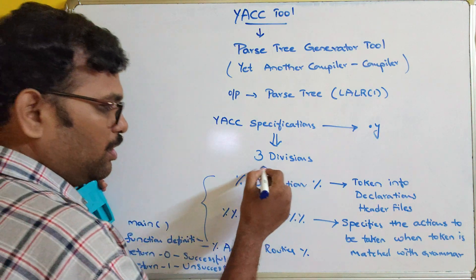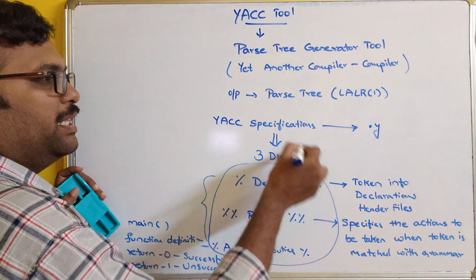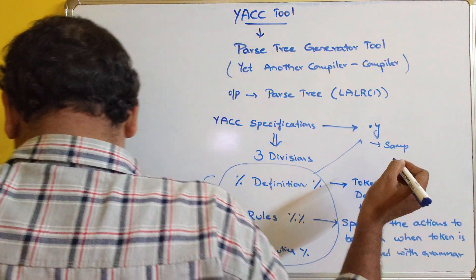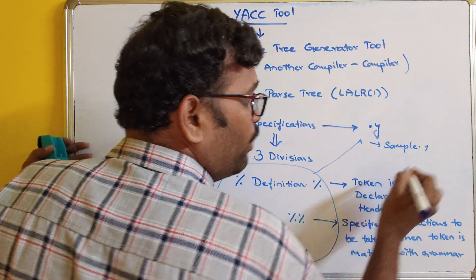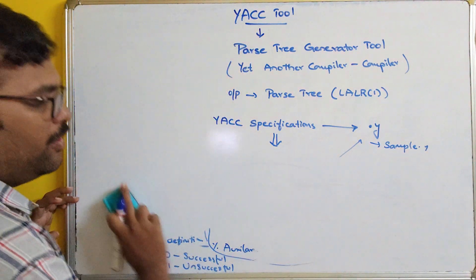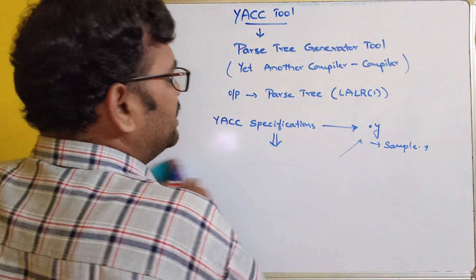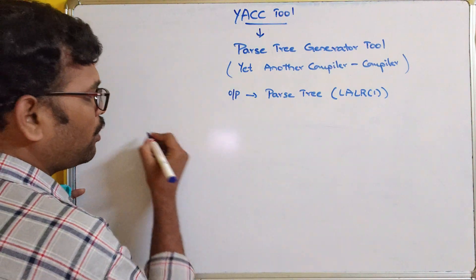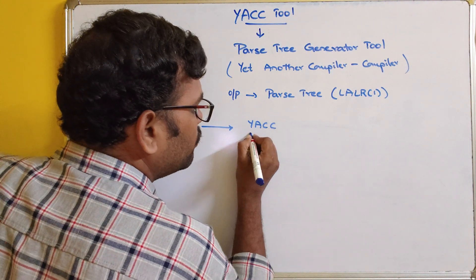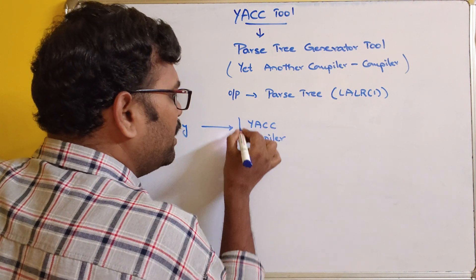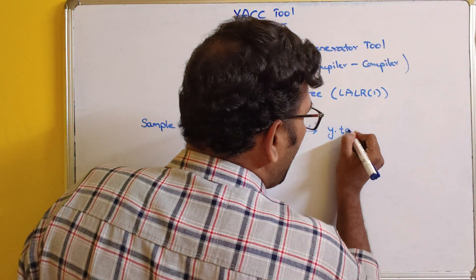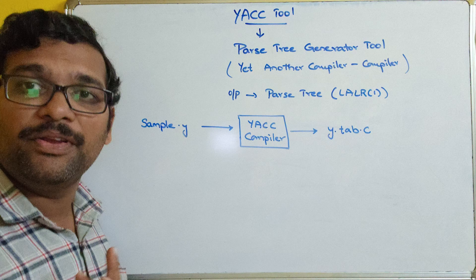After specifying all this, the complete grammar is available in the YACC specifications file with a dot Y extension — for example, sample.y. This sample.y file is given as input to the YACC compiler. The YACC compiler then produces a file called y.tab.c — a C programming file as output.